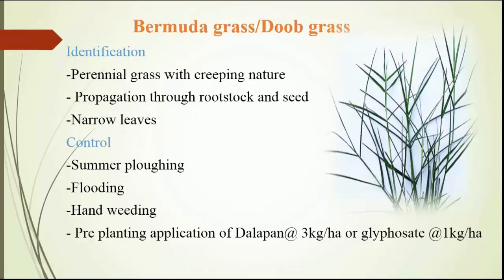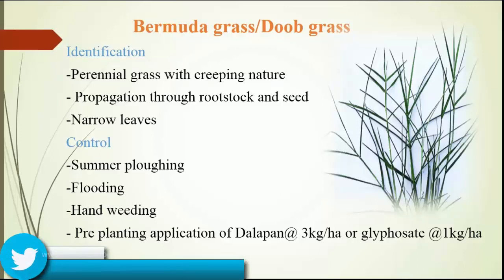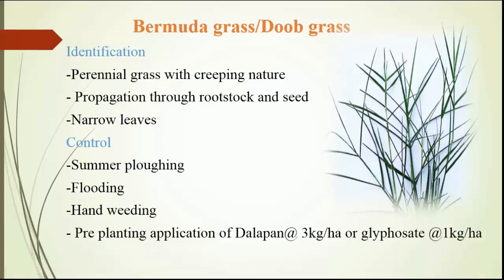Next, bermuda grass, also known as doob grass. The major identification of bermuda grass is perennial with creeping nature. Propagation of bermuda grass is through root stock or seed, with narrow leaves. Control: bermuda grass should be controlled by summer deep plowing, flooding, hand weeding, and pre-planting application of dalapon herbicide at the rate of 3 kg per hectare or glyphosate at the rate of 1 kg per hectare.